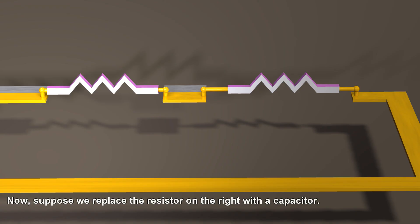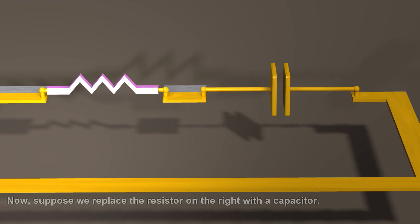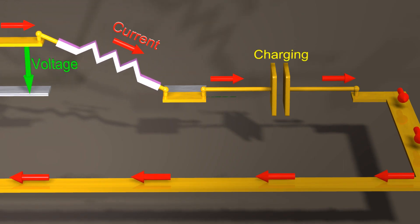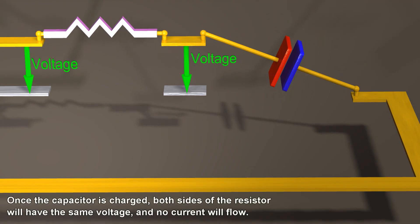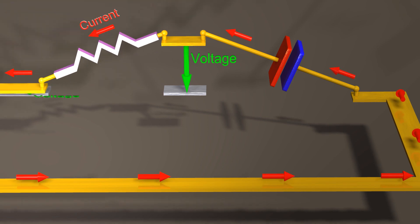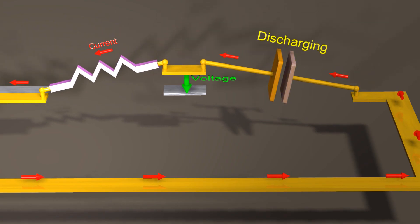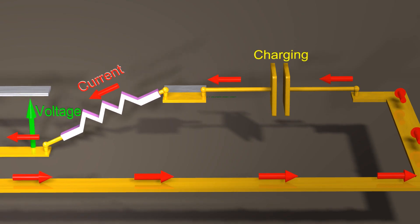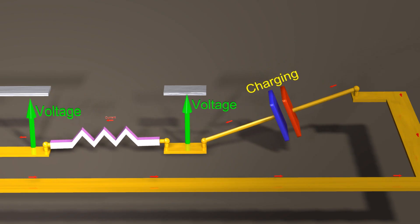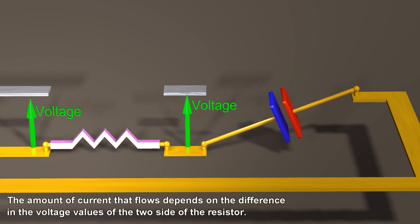Now, suppose we replace the resistor on the right with a capacitor. Once the capacitor is charged, both sides of the resistor will have the same voltage, and no current will flow. Current flows only if we change the value of the input voltage. The amount of current that flows depends on the difference in the voltage values of the two sides of the resistor.